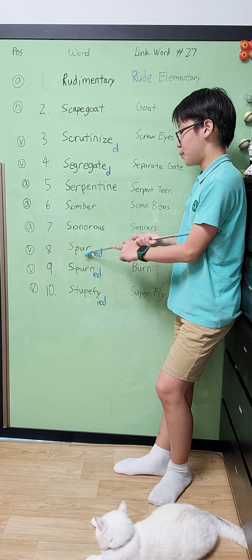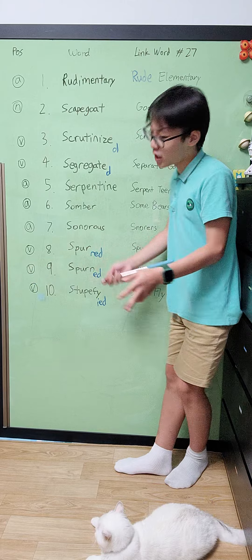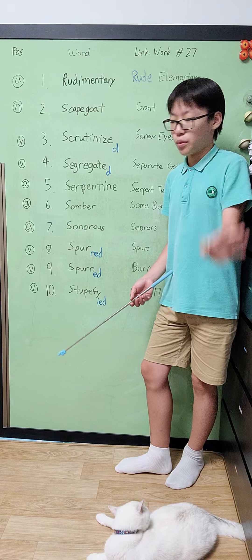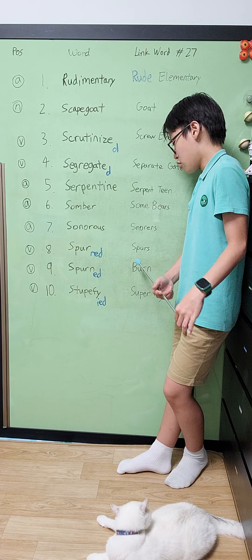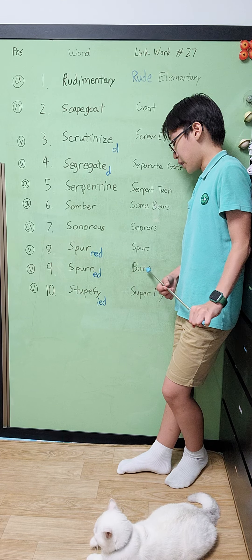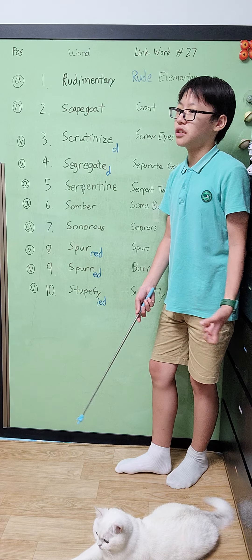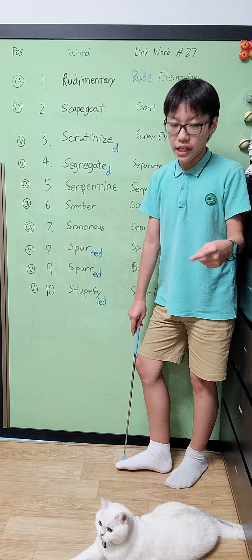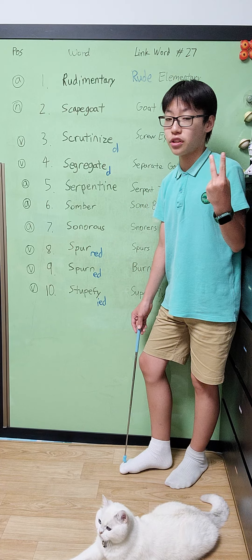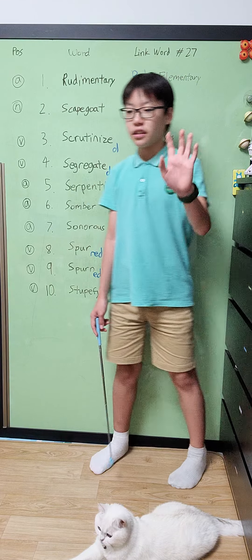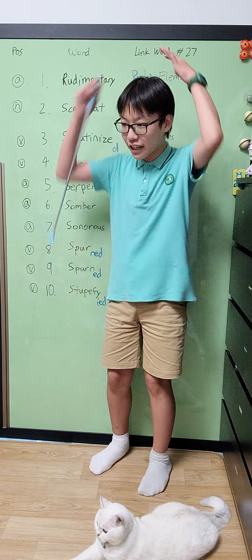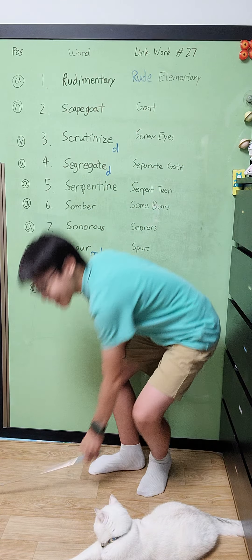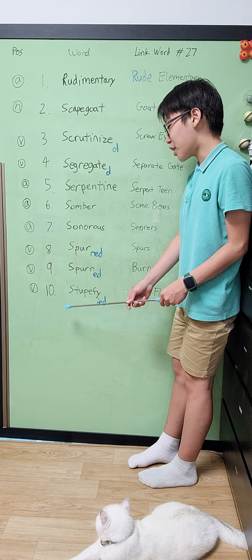Number 9, spurn — which is basically sperm with an N attached to it. Spurn is a verb that basically means to say no — no thanks — to reject someone. You remember spurn with burn: when Mike was spurned by his date to a dance, he burned — literally with fire. Imagine two scenes: the dance, then the date says no, and then he's burning.